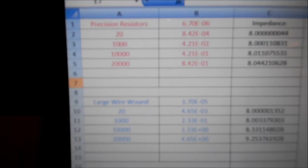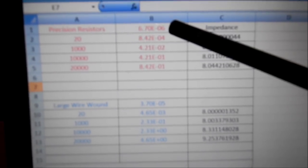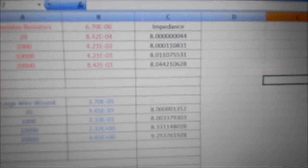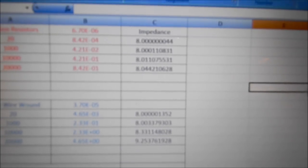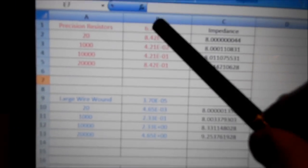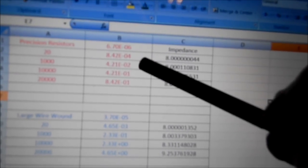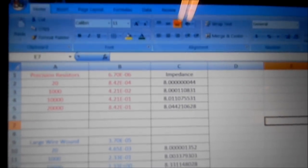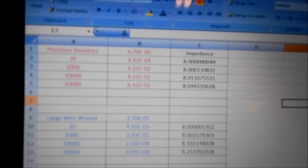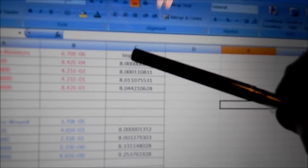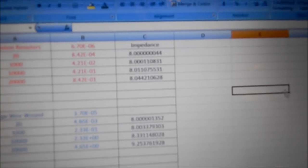Here's the truth: our precision resistors at 20 Hz, 1 kHz, 10 kHz, and 20 kHz with 6.7 microhenries inductance. Here's the actual calculation of Z equals square root of R squared plus X squared. It's 8.00 ohms all the way out - 8 ohms at every frequency, even up at 20 kHz. The inductive reactance is 0.00842 ohms here and 0.0421 ohms there.